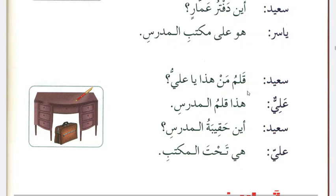سعید asks: كلم من هذا يا علي؟ Whose pen is this, O Ali? Ali replies: هذا قلم المدرس. This is the pen of the teacher. سعید then asks: أين حقيبة المدرس؟ Where is the bag of the teacher? The reply is: هي تحت المكتب. It is under the table.